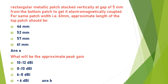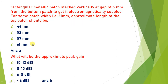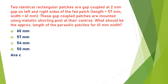Two identical rectangle patches are gap coupled at 2 mm on both sides. The length of the parasitic patch must be less than the feed patch. The active/feed patch length is 57 mm, so the parasitic patch length must be less than 57 mm. The closest value less than 57 is 54 mm, so the answer is C.